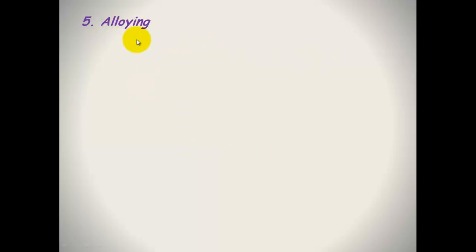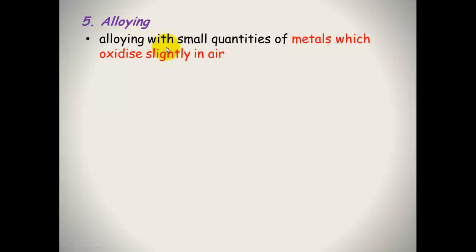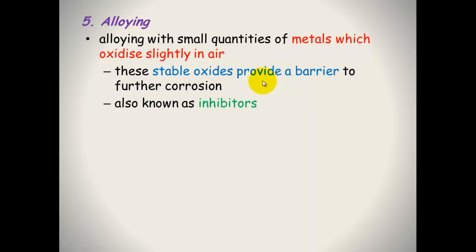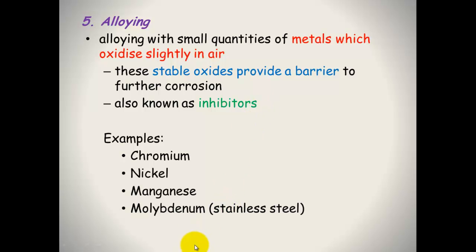Alloying is another way to stop or inhibit corrosion. When you're alloying, you're going to do it with small quantities of metals which will oxidize slightly in the air. This oxidized version will actually be quite stable and will provide a protective barrier to stop any further corrosion. They're also known as inhibitors because they inhibit corrosion. Some examples are chromium, nickel, manganese, and molybdenum. This is very popular as stainless steel and used in your sinks, taps, and all of those sorts of things.